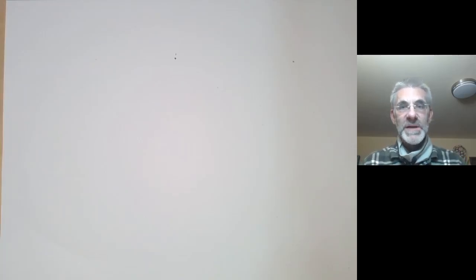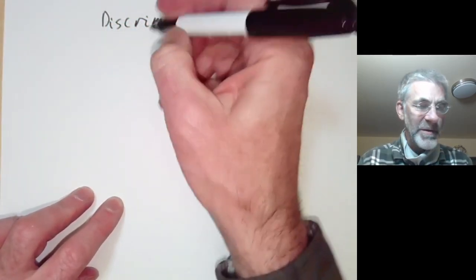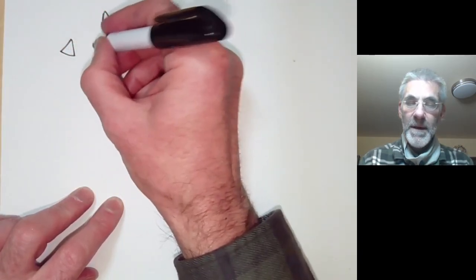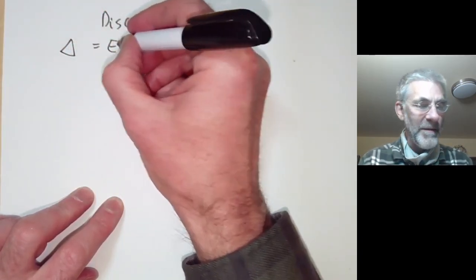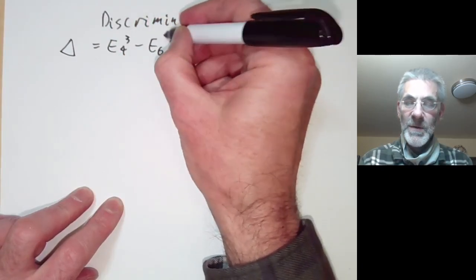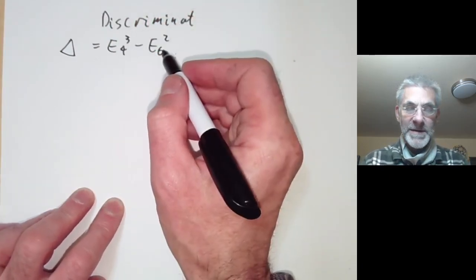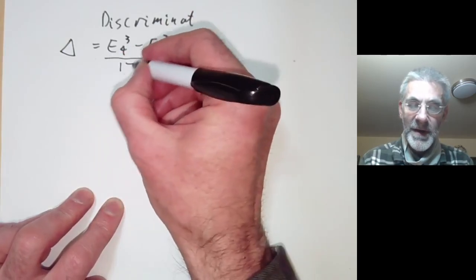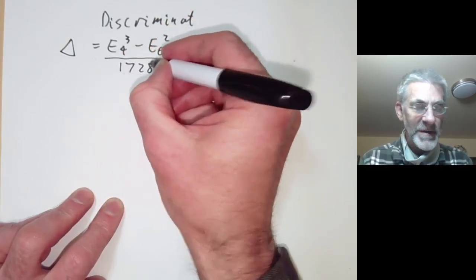This lecture is part of a series on modular forms and will be about the discriminant function. The discriminant function, usually denoted by Δ, is E4 cubed minus E6 squared, where E4 and E6 are the Eisenstein series, except you divide this by 1728.